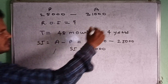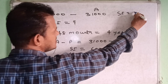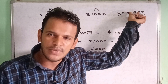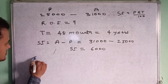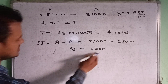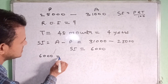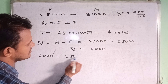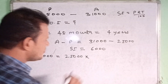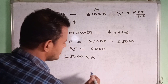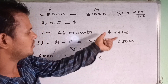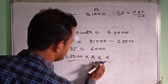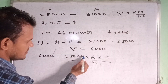The simple interest formula is SI = (P × R × T) / 100. So: 6,000 = 25,000 × R × 4 divided by 100. The rate of interest R is unknown, and time is 4 years.